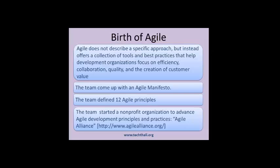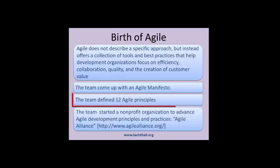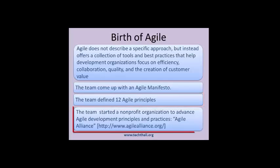The following are the outcomes of the meeting: 1. Defined an Agile manifesto. 2. Defined 12 guiding principles for Agile methodology. 3. Started a non-profit organization, the Agile Alliance, to improve and spread their concept.